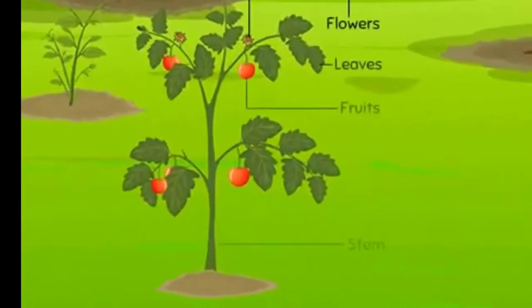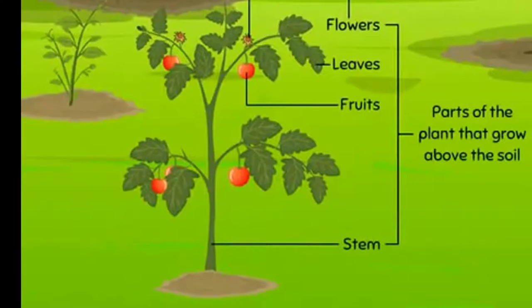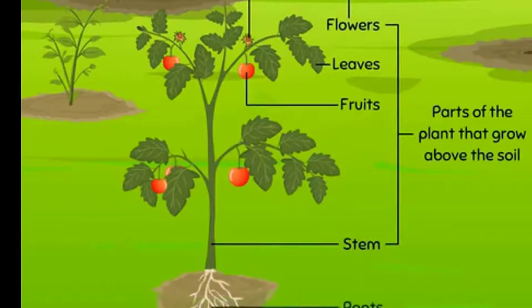When we look at most plants around us, we see the parts of the plants that grow above the soil. Do plants have other parts as well? Plants are able to stand tall and firm because of this part of plant called the roots, which mostly remain under the ground.